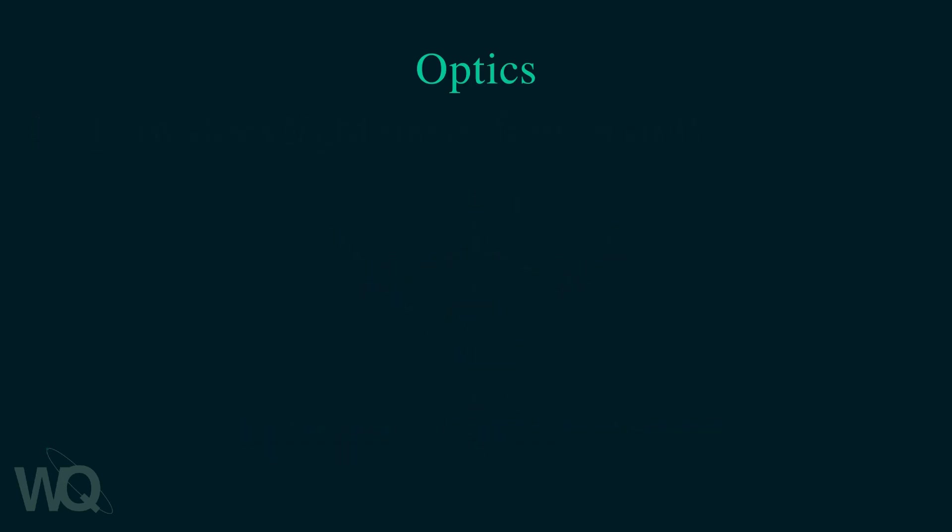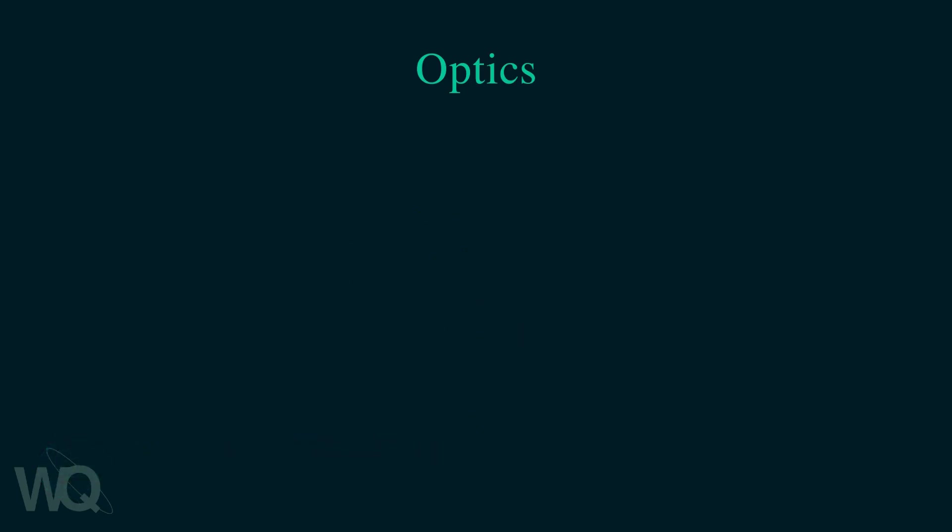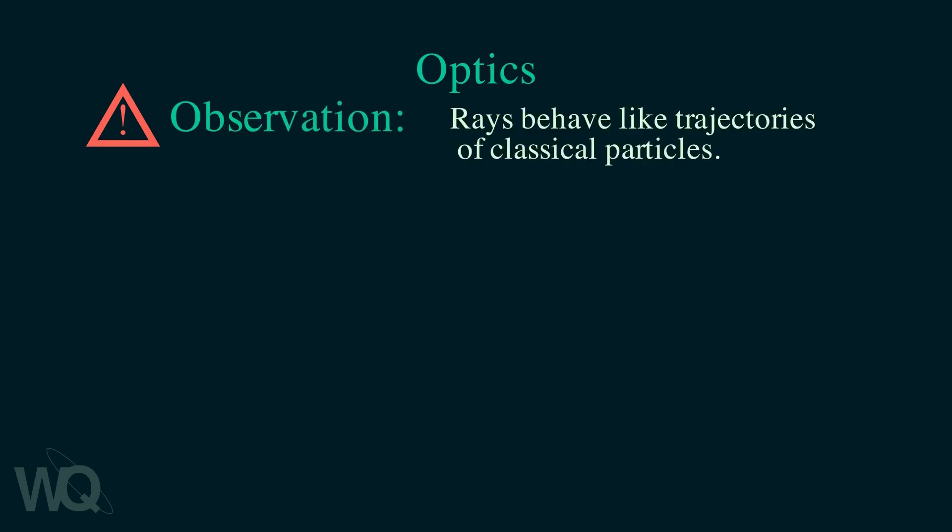Also note that just as you can get the rays from the wave fronts, you can also get back to wave fronts from light rays. You might notice that light as rays behaves a lot like trajectories of classical particles. Is this a mere coincidence or does it point to something deeper?